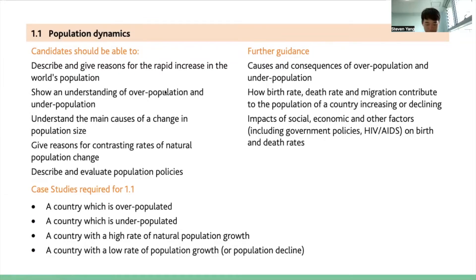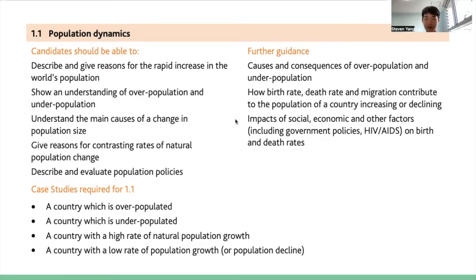I'd also like to delve into the supplementary detail that consists of causes and consequences of overpopulation and underpopulation, how birth rate, death rate, and migration contribute to the population of a country increasing or declining, and the impact of social, economic, and other factors on birth and death rates. In the latter part of the lecture, I'll introduce some case study examples you need for the exam on the paper one seven mark paragraph question.